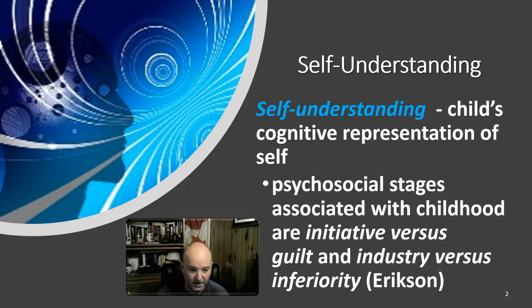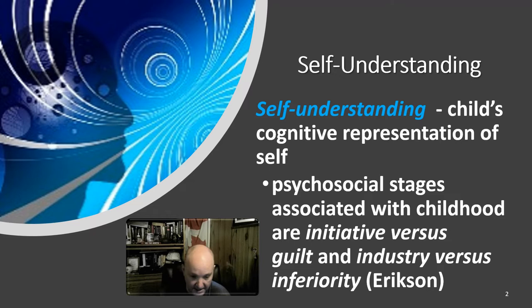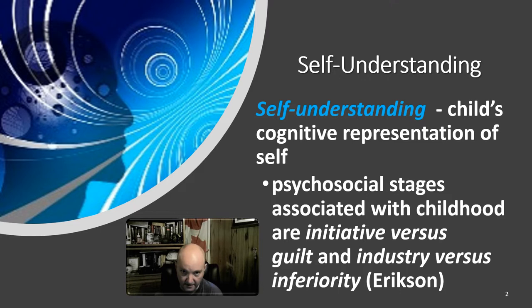The child's self-understanding is their cognitive representation of self — how they represent themselves as the character in their own mind, how they think of themselves, who they are in their mind. There are key things associated with influencing this. Starting from a psychoanalytic position, Erikson says that in childhood, developing a sense of initiative and a sense of industry are actually really core key things.